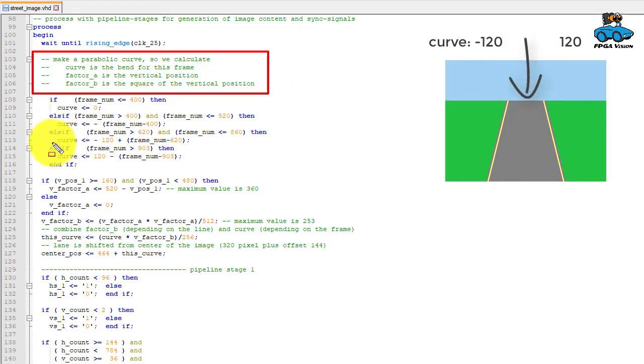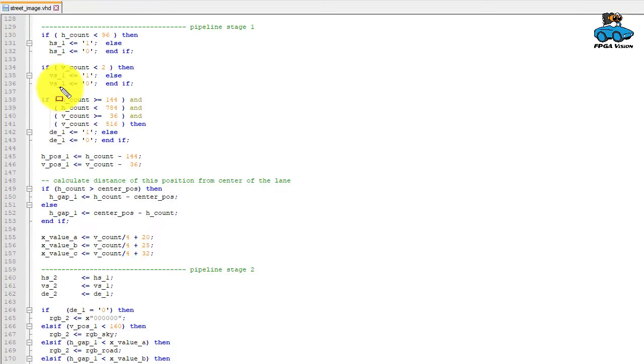Depending on the frame number, we define how we have the curve of the street. Then we calculate a vertical factor because the street becomes more narrow at the top of the image and is wider at the bottom. So we take this factor depending on the vertical position, we take the square, and we combine it with a curve. Then we get the center position for this curve. In the next pipeline stage we generate the horizontal and vertical sync signals and the enable signal to indicate where the image is active. We calculate the distance of our horizontal position from the center position we calculated earlier.